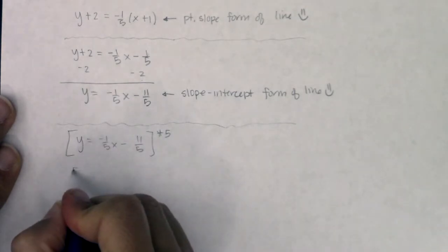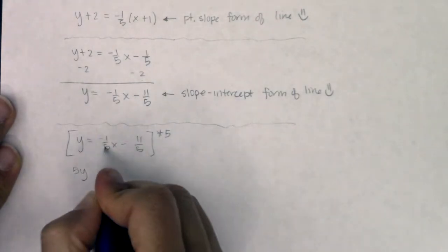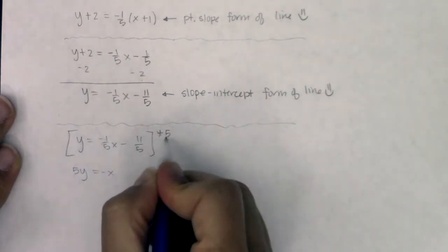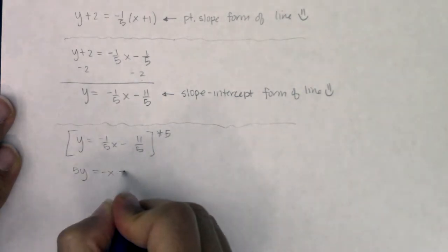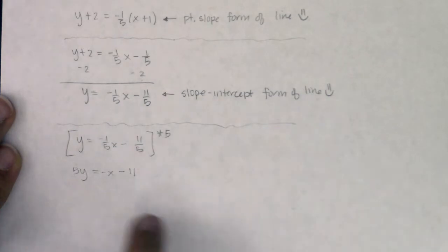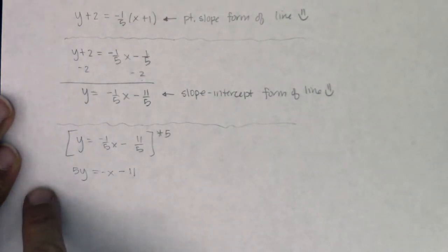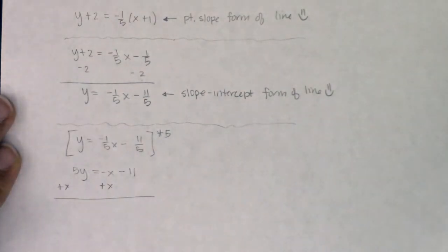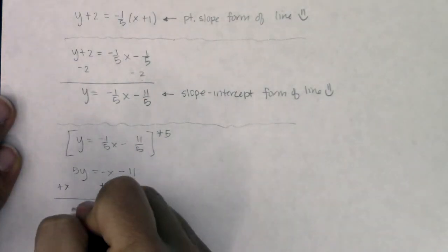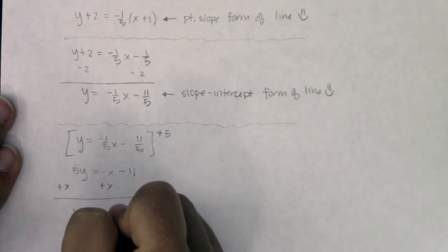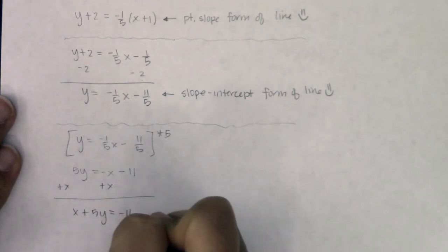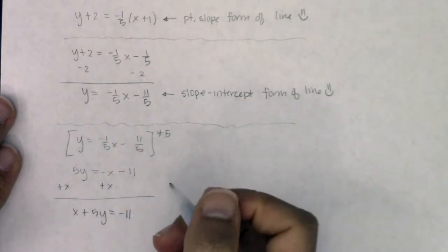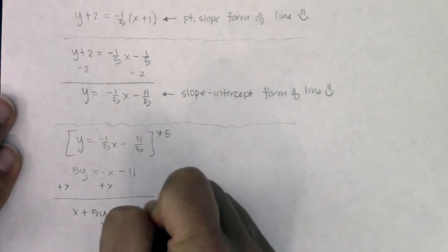5 times y, 5y. The 5 will cancel with the 5 here, and I have negative x. 5 will cancel with the 5 here, and this will be 11. And then all I need to do to get it into standard form is move the x over. Because in standard form, you need both variables on one side of the equation. So we have x plus 5y equaling negative 11. And that is the standard form of the line.